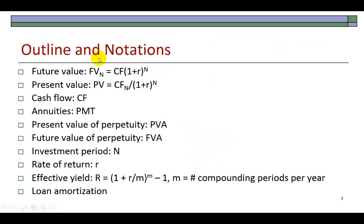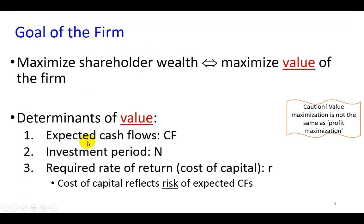Here's the outline and notations we're going to be using throughout the presentations. In finance, we argue that the goal of the firm is to maximize shareholder wealth, which is done by maximizing the value of the firm for the firm's owners. The key word here is value. The determinants of which are expected cash flows, the period of investment, and the required rate of return on the investments, which is the cost of capital.